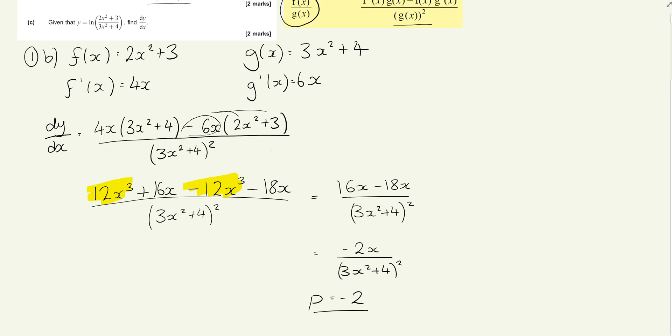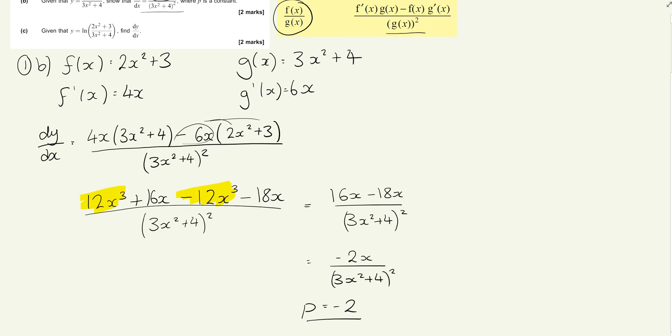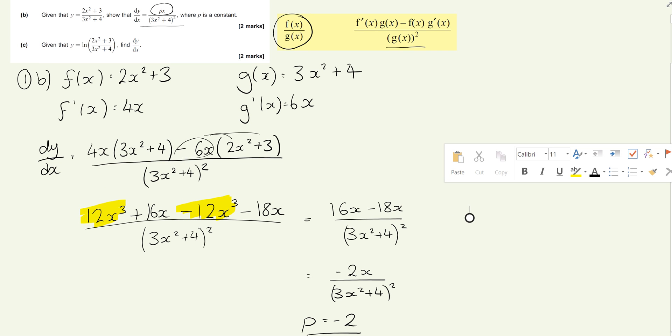Just going back to the question, giving ourselves a bit of room, p is a constant, it doesn't need to be positive, it can be -2. That's our final solution for this quotient rule question.